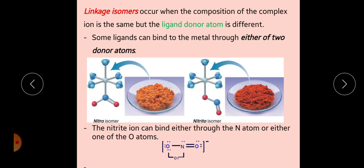First we start with linkage isomers, also called band samavivarta. Linkage isomers occur when the composition of the complex ion is the same but the ligand donor atom is different. If the ligand is the same in both isomers but its donor atom is different, a different isomer is formed. This is related to the ambidentate ligand — a monodentate ligand that has more than one donor atom. Under different conditions, the donor atom changes and the nomenclature of the ligand also changes accordingly.